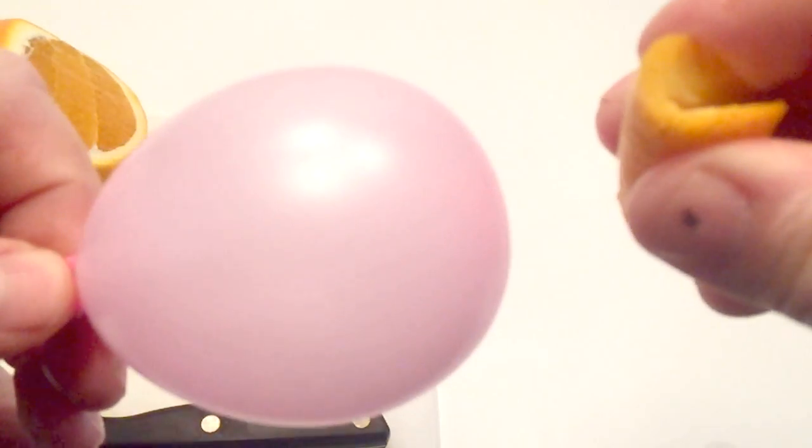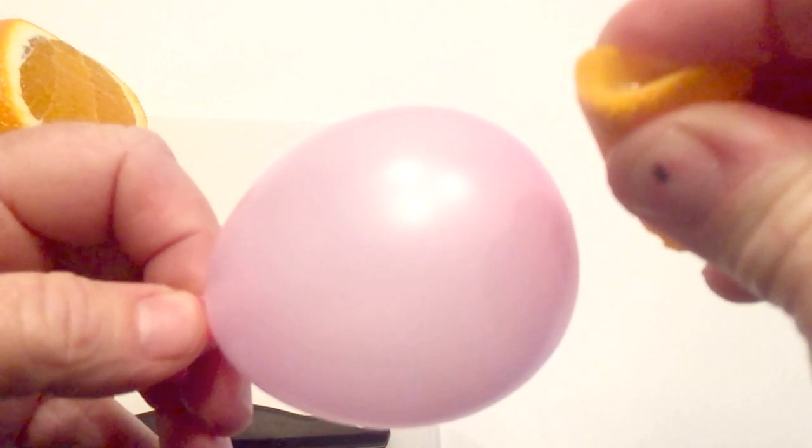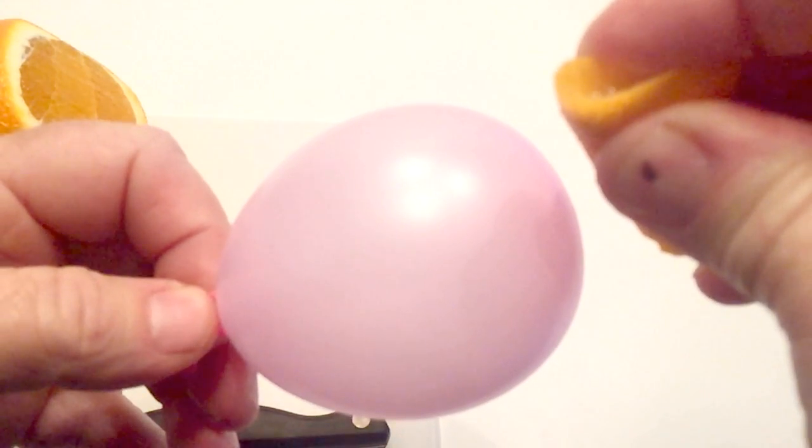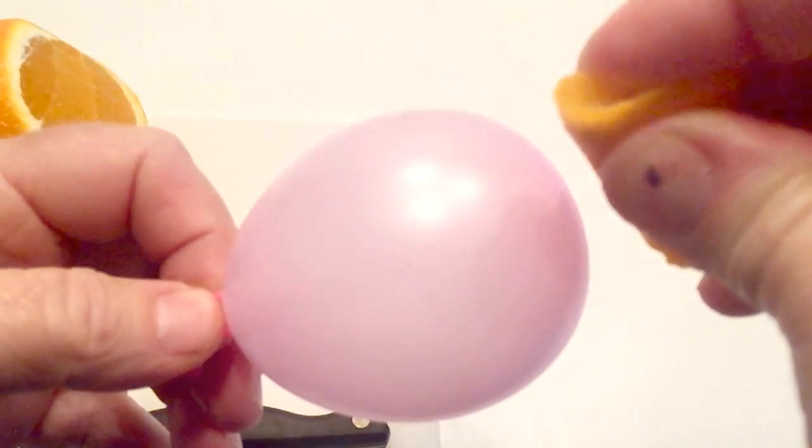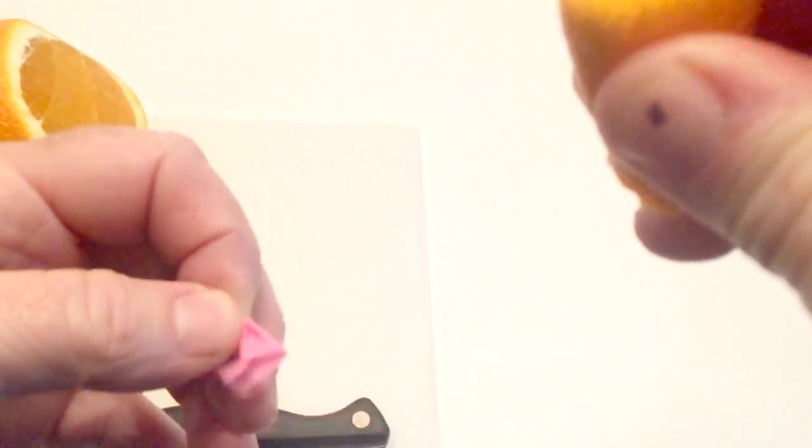Limonene is a hydrocarbon. Latex rubber is also a hydrocarbon. Hydrocarbons will dissolve together if in contact with each other. So when the citrus oil touches the surface of the balloon, some of the latex immediately begins to dissolve, and it pops.